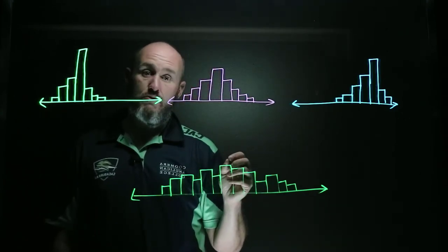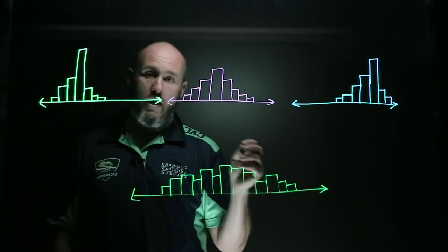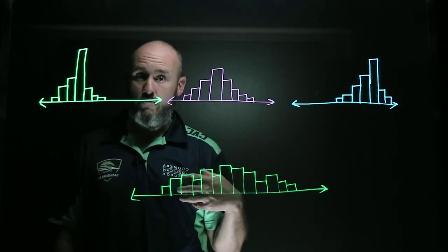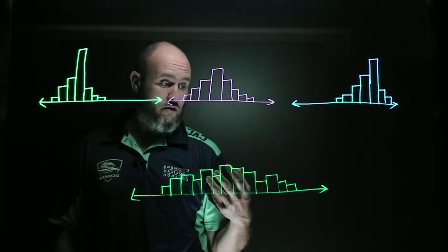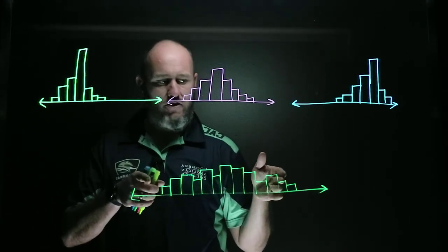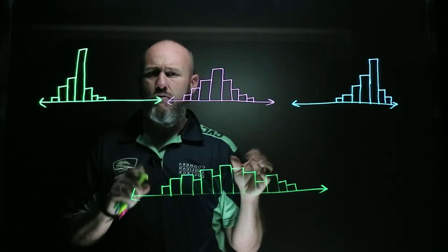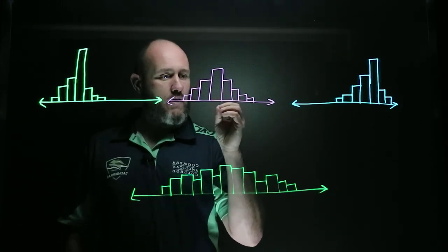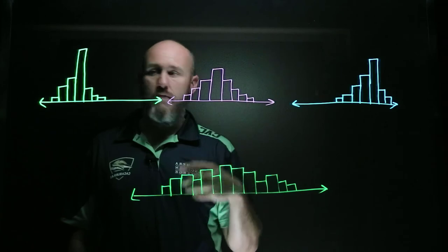Now, remember our measures of spread were range, and then we also have talked about standard deviation in a previous video. So, this clearly has a bigger range and it's more spread out. It will also have a larger standard deviation. So, there's some information for you on location, spread, and shape of graph.